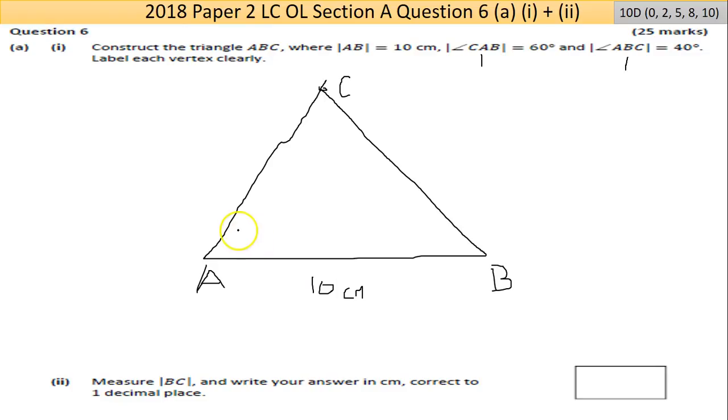That's the triangle drawn. I'd fill in the gaps here, that's 60 and then 40 here. Now the second part asks you to measure BC. Measure the length of this side here and write your answer in centimetres, correct to one decimal place.